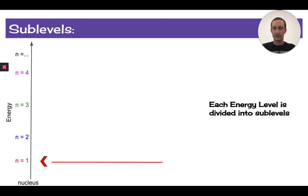So the first energy level is actually just one sublevel. And we actually label it with some letters. We call that first energy level and the one sublevel, we call that an S layer.